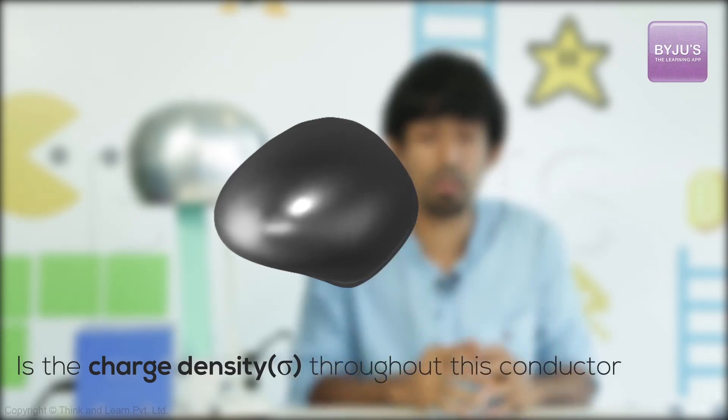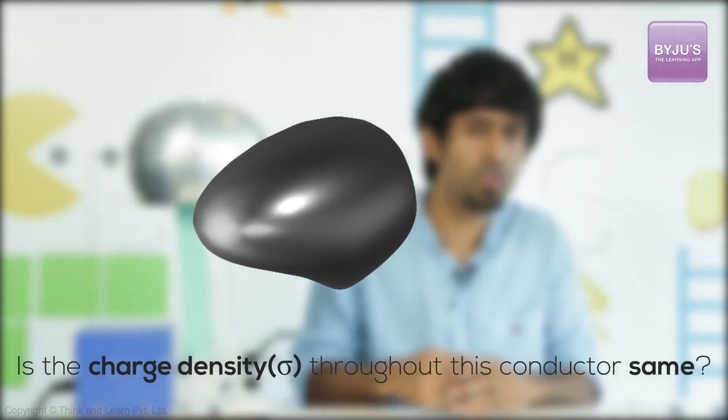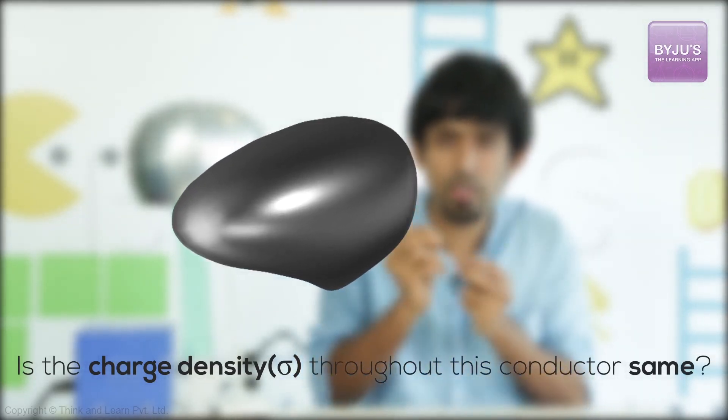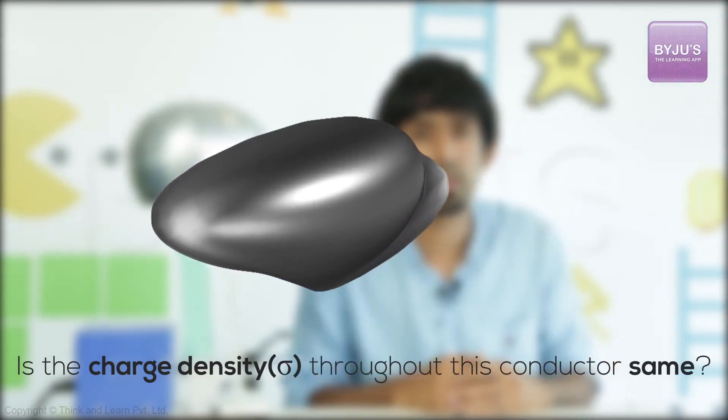Then my question is, is the charge density throughout this conductor the same? In other words, if you take a small region, the amount of charge you'll find in that region, will it be the same throughout this conductor? And the answer is, it won't be.